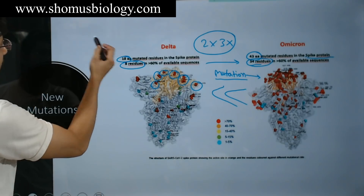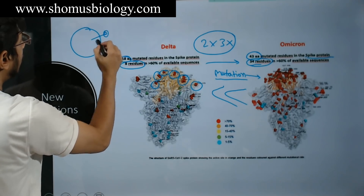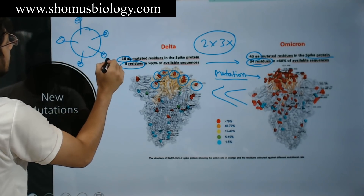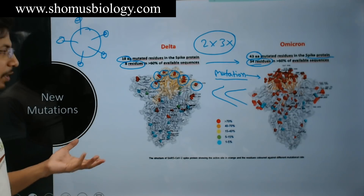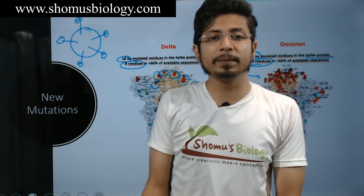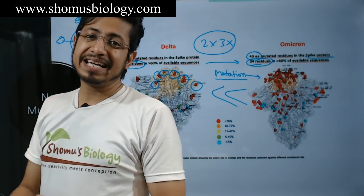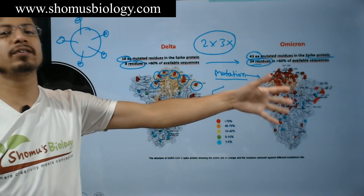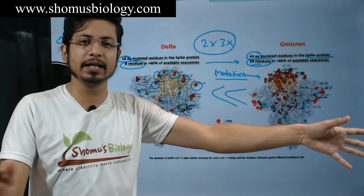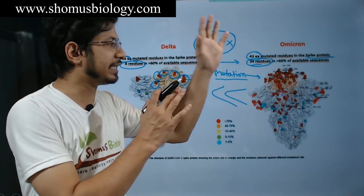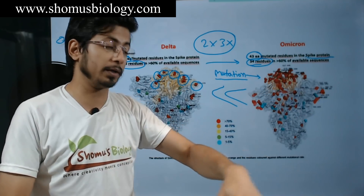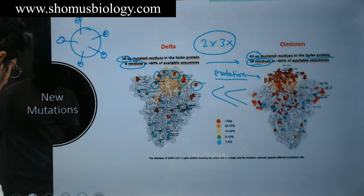In simple terms, all these spike proteins that the Omicron variant produces will be something different and new, which our immune system may not recognize. Our vaccine may not be that effective either. And it must have higher transmissibility — that's for sure. After all these years of studying microbiology, I can tell you that the Omicron variant will obviously be more transmissible. There is no doubt about that. But regarding the other aspects, we need to study and find out.